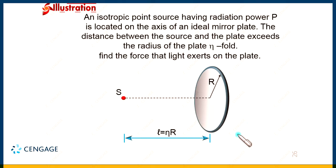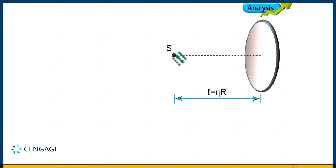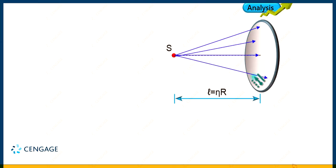Looking at the diagram, you can observe that the distance of each and every point on the surface from the source is different. If you draw the lines representing the direction of the rays, the distance of each and every point on the surface of the plate is different. That means the intensity at these points where rays are incident on the surface will be different — the intensity of the radiation is not constant over the surface.